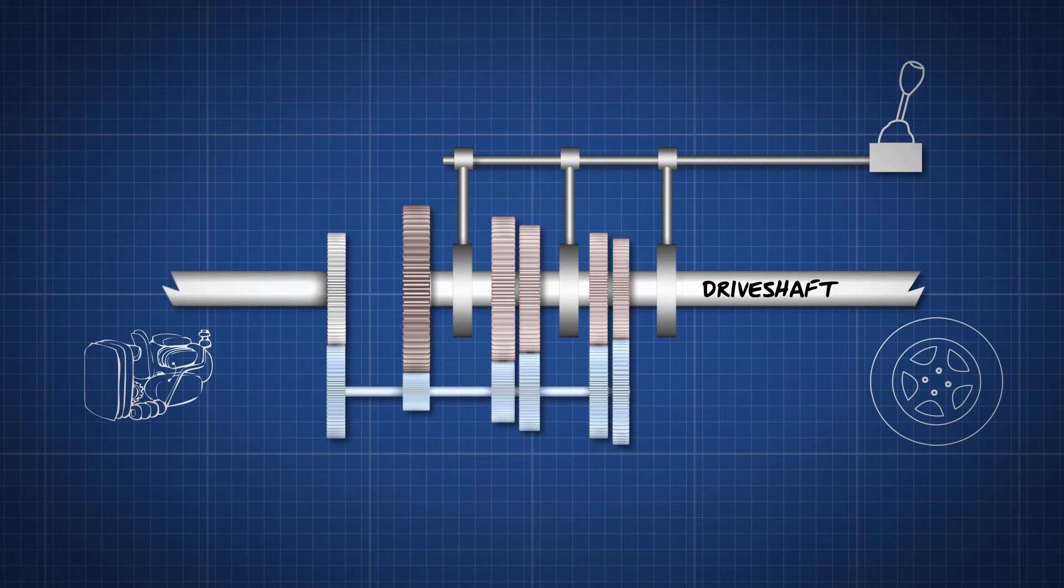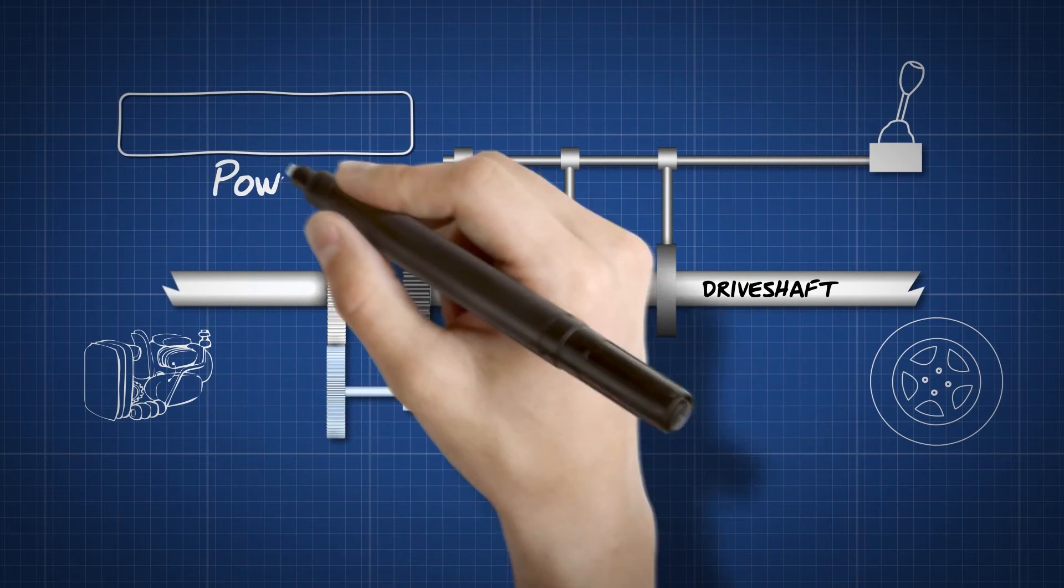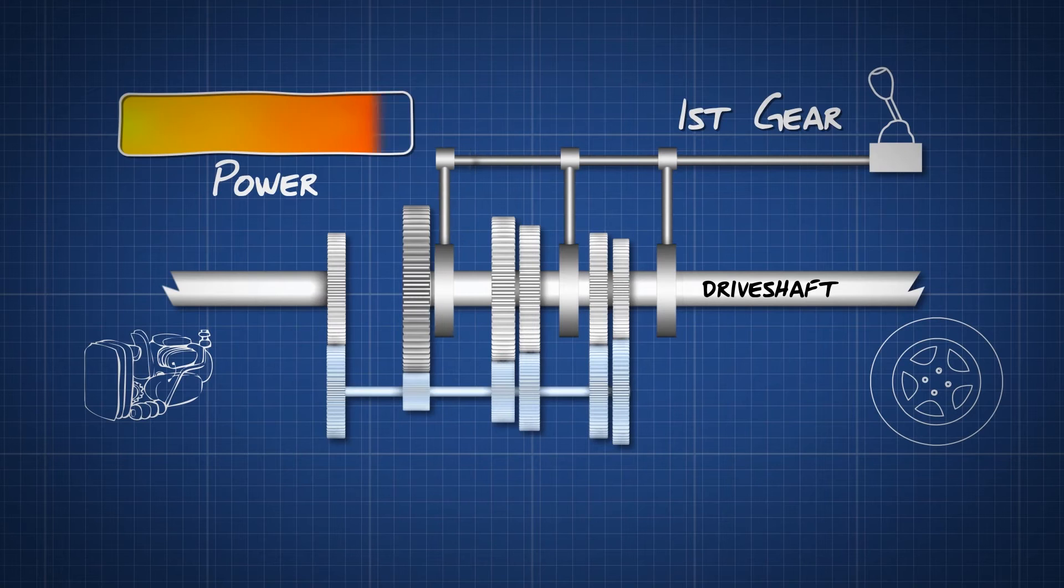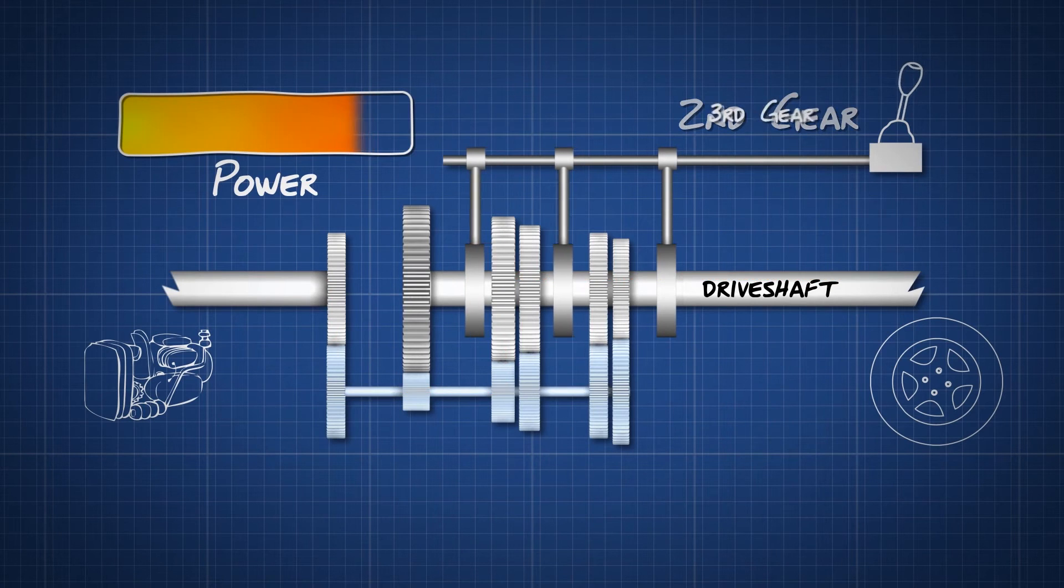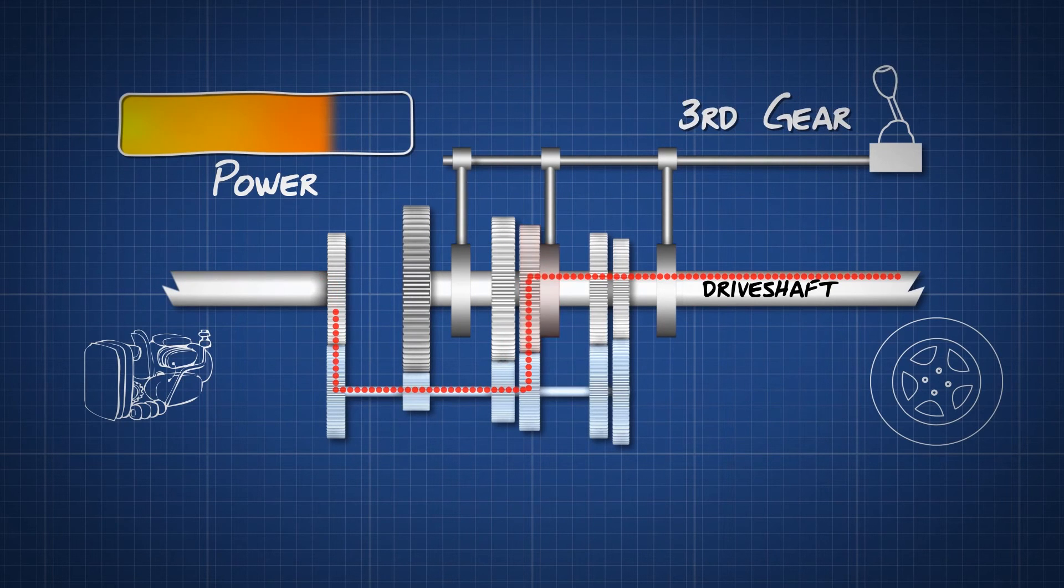The gears are used so the driver can select the required performance for the driving condition. Each cog is different in size and consequently when selected and connected to the drive shaft, rotate at different speeds which increase or decrease the speed of the output shaft that is connected to the wheels.